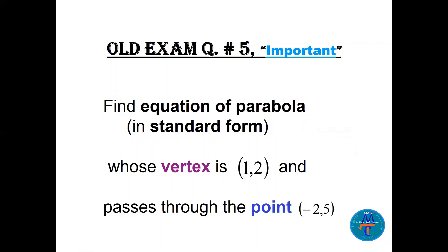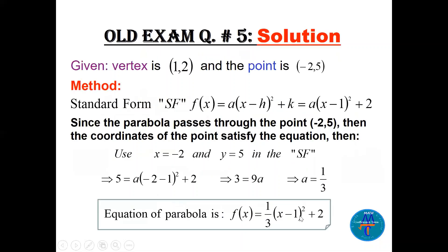Question five: find the equation of the parabola in standard form with vertex (1, 2) passing through the point (-2, 5). Write the standard form f(x) = a(x - h)² + k, where h = 1 and k = 2. Since the parabola passes through (-2, 5), substitute x = -2 and y = 5 to find a = 1/3. The equation is f(x) = (1/3)(x - 1)² + 2.